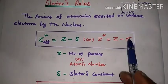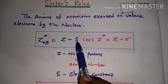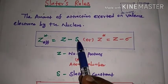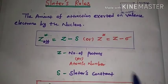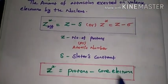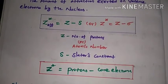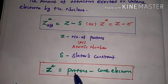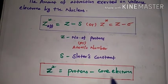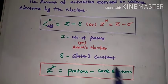Z effective, the effective nuclear charge, equals Z minus S, where S and sigma equal the shielding constant, screening constant, or Slater constant. Z is the number of protons, the atomic number.